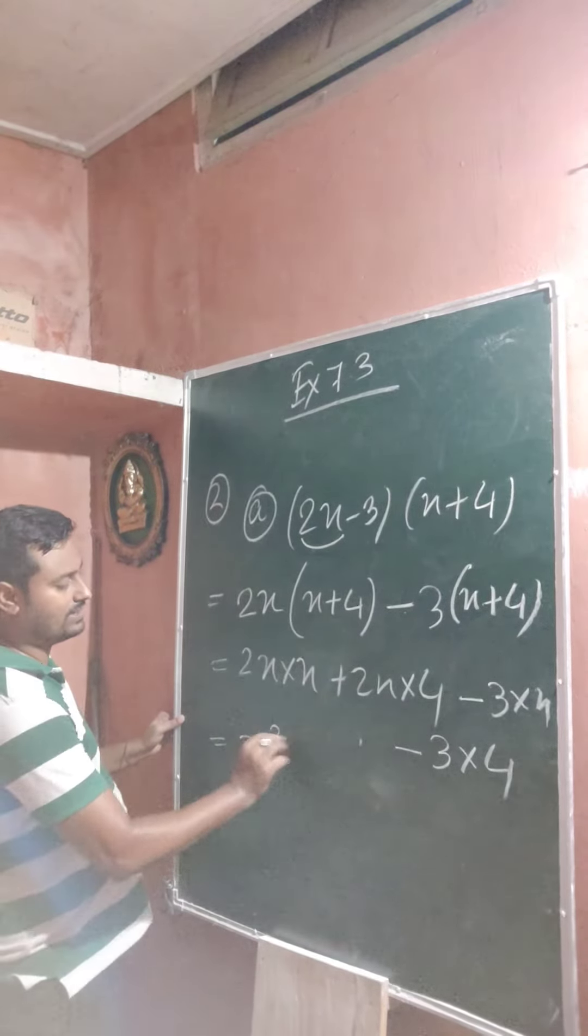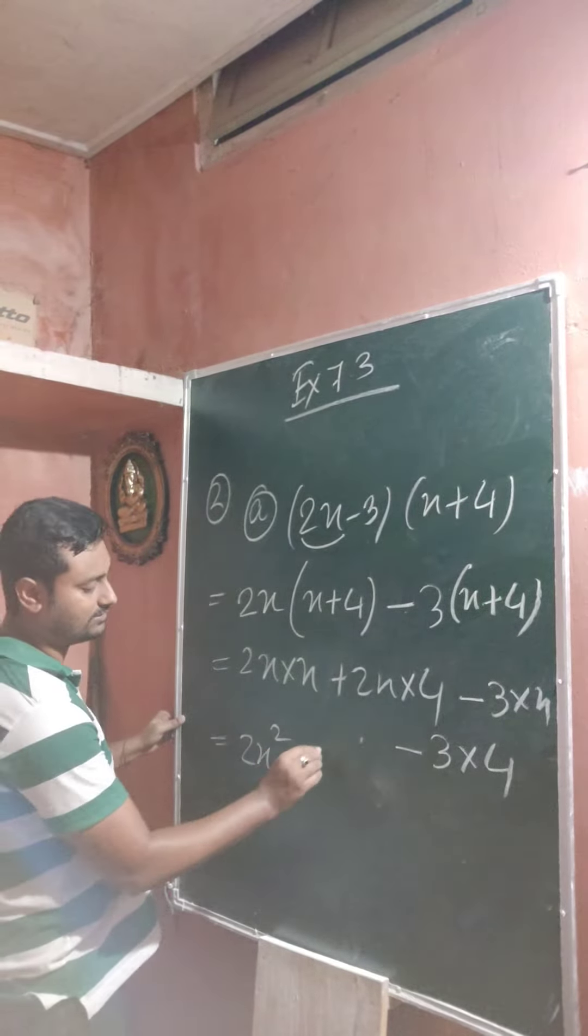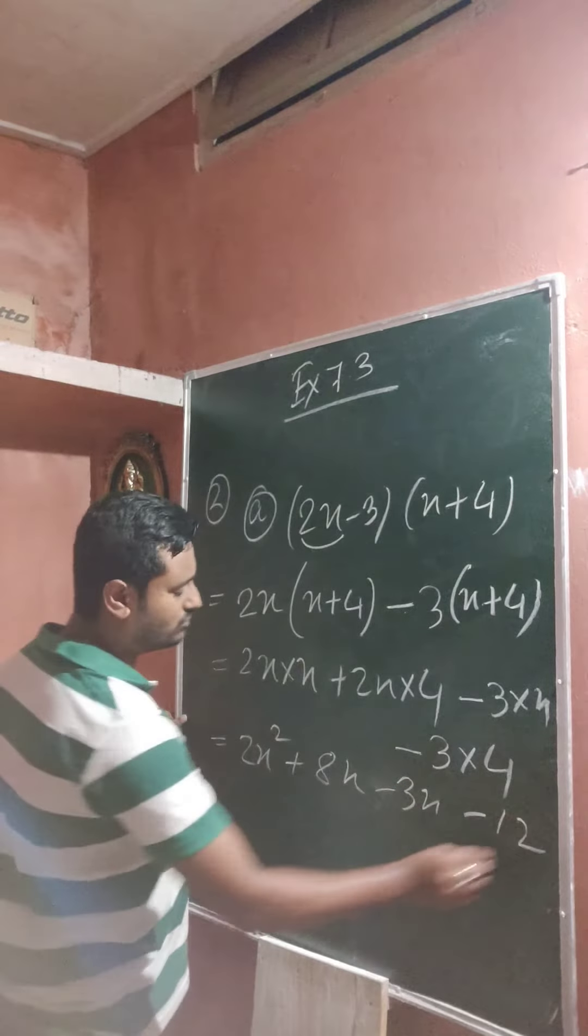So this one is 2x squared. Plus 2x into 4 is 8x. This one minus 3 into x, minus 3x. And this one is minus 12.